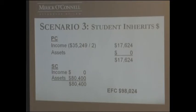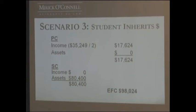The student's income of $5,000 is zeroed out by the formula. But now, of that $400,000, the federal government says this student can contribute $80,000 this year based on assets and income. So if you add $80,400 and $17,624, the family EFC is now $98,024.